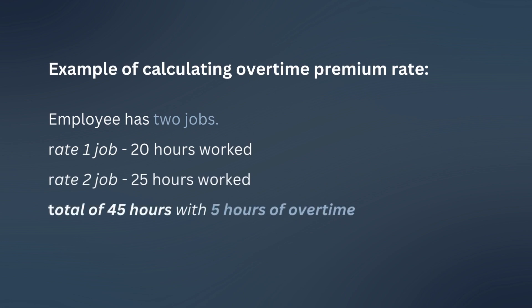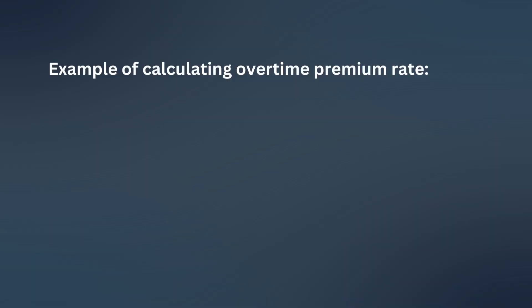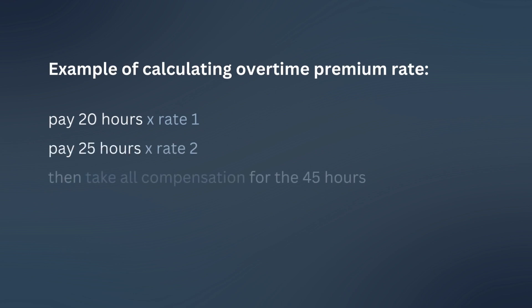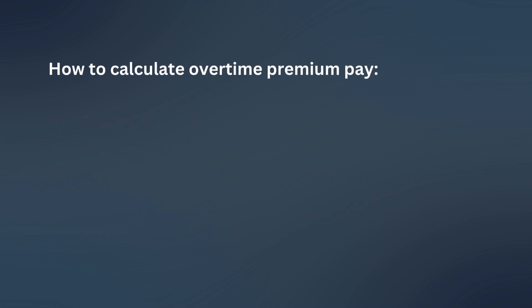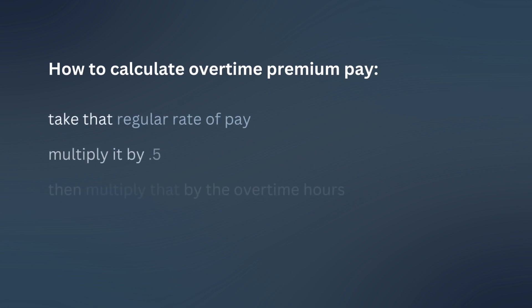We do have five hours of overtime in this example. To pay this employee, you'll pay 20 hours times the regular rate for that job, and 25 hours at the regular rate for that job. Then you take all of the compensation for those 45 hours, divide it by the total hours worked — which is 45 in this case — and that is your regular rate of pay. You take that regular rate of pay, multiply it by 0.5, and multiply that by the overtime hours to get the overtime premium pay.